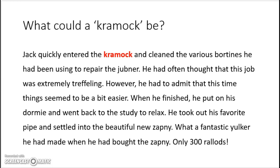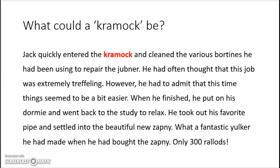The first question was: what could a cramock be? We have this word cramock — it's a noun. The sentence says Jack quickly entered the cramock. So maybe we can guess that it's a place, some kind of house or room. He entered the cramock and cleaned the various bortings he had been using to repair the jubner. So we could still guess it's a room where you clean stuff and repair stuff — maybe a garage or something like that.